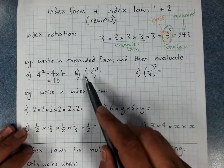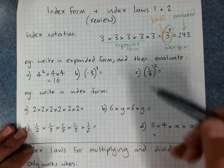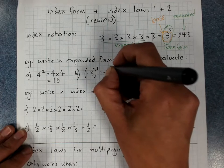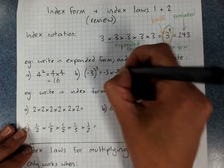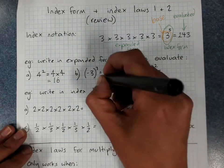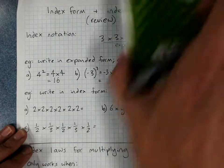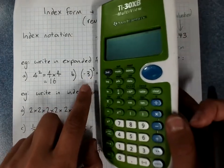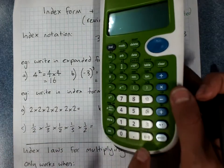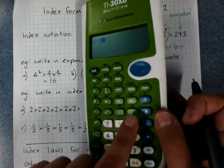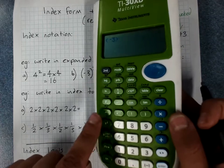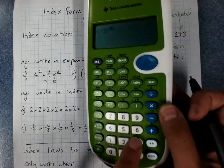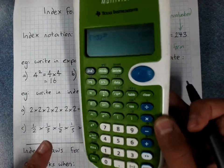Negative 3 cubed — notice it's got brackets around it. Expanded form is negative 3 × negative 3 × negative 3. Use your calculator with the brackets: open bracket, negative 3, close bracket, to the power 3, equals negative 27.